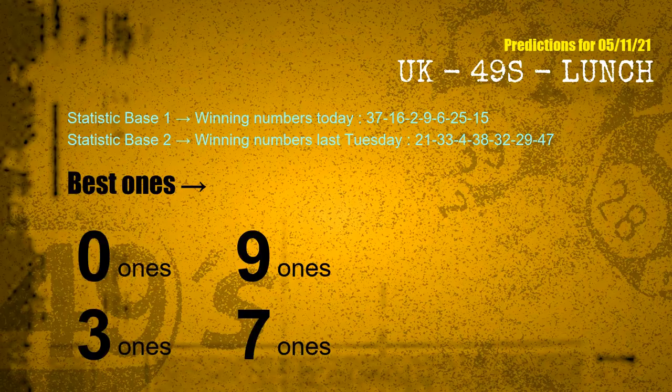According to the statistics above, with winning numbers today — 37, 16, 02, 09, 06, 25, 15 — and winning numbers last Tuesday — 21, 33, 04, 38, 32, 29, 47 — the most frequent following ones are: 0 ones, 9 ones, and 3 ones.